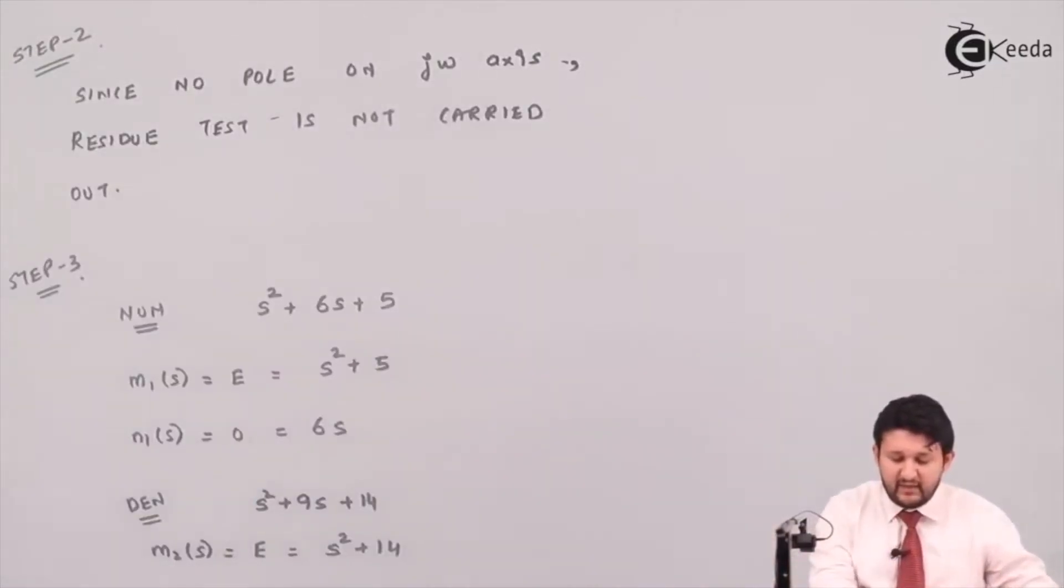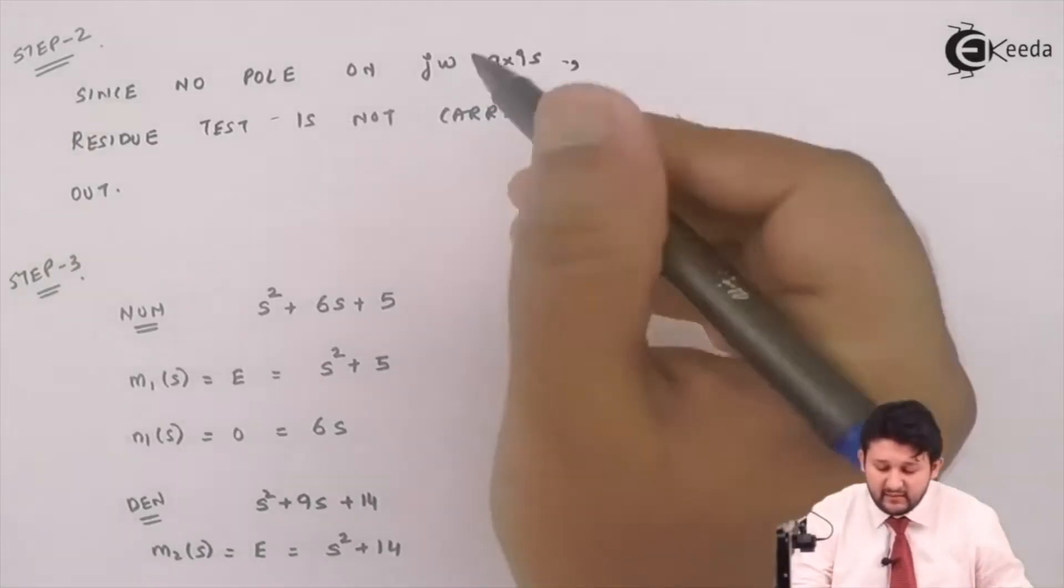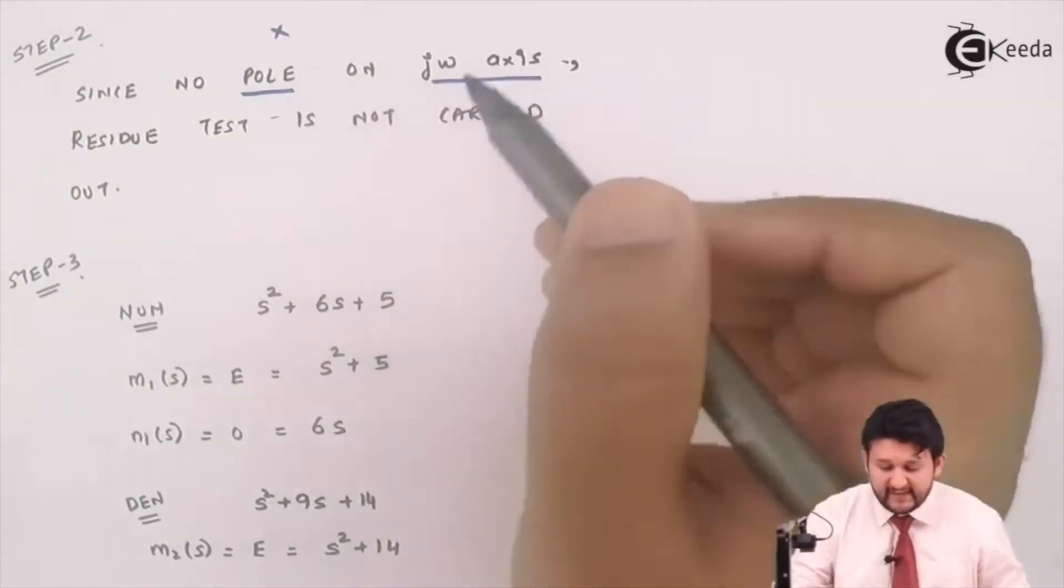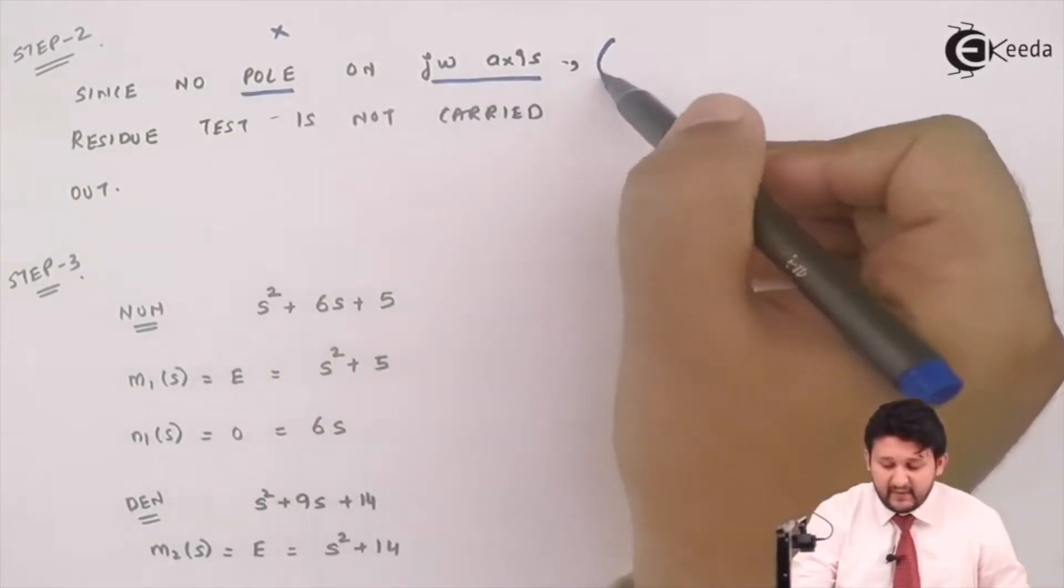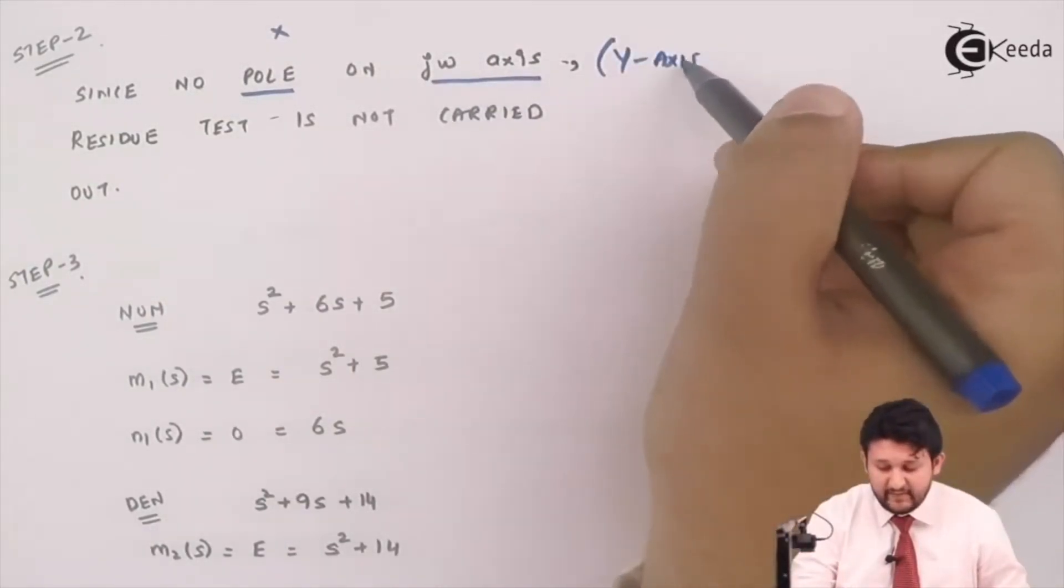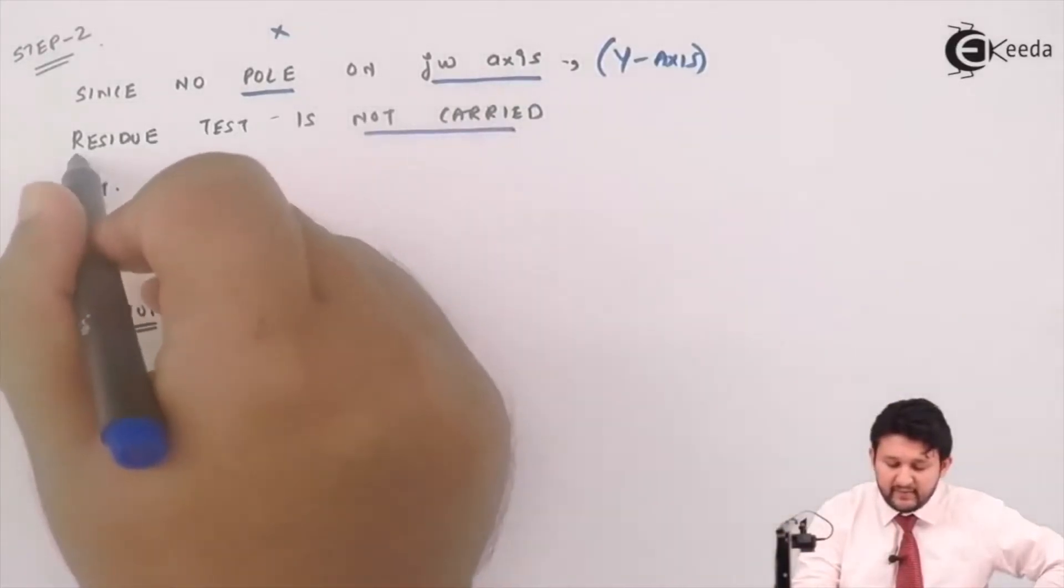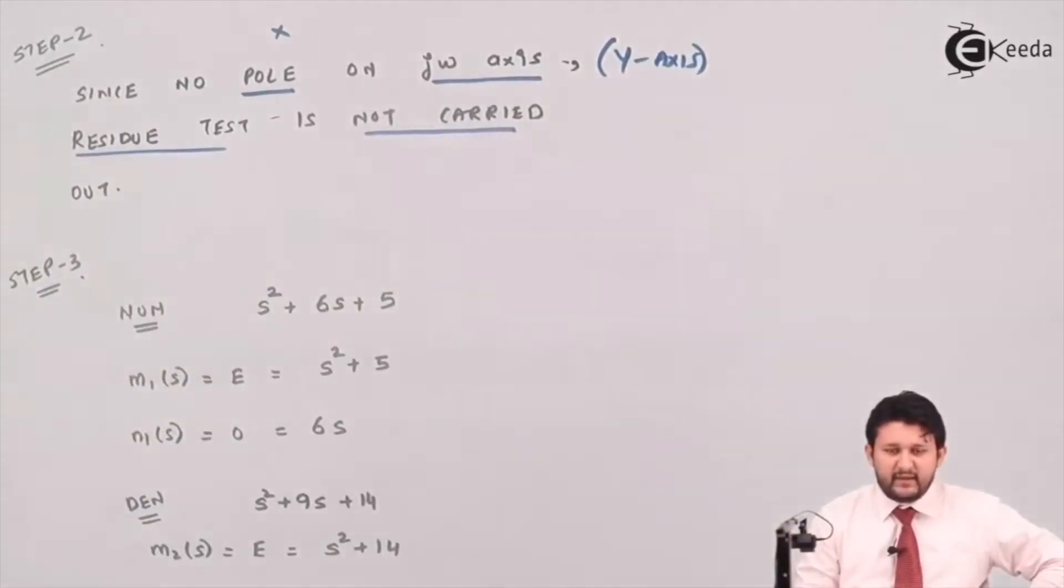Let's go for step 2, my dear friends. For step 2, I need to check if there are any poles, that means cross, on jω axis, that means your y-axis. Since the whole s-plane doesn't have any pole on jω axis, residue test is not required.